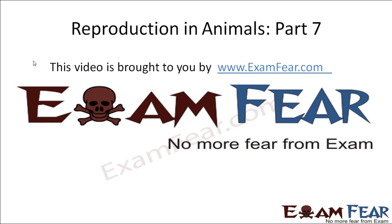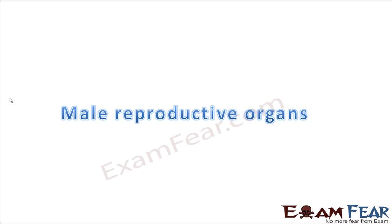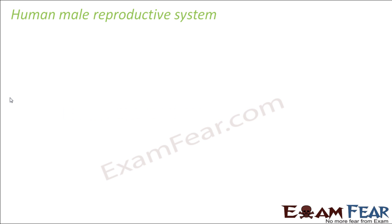Hello friends, this video on reproduction in animals part 7 is brought to you by examfear.com — no more fear from exam. So now we are going to talk about the reproductive organs in males, and then we will talk about the reproductive organ in female. We will discuss the various parts of the male reproductive system and see how the male gamete is produced. So: human male reproductive system.